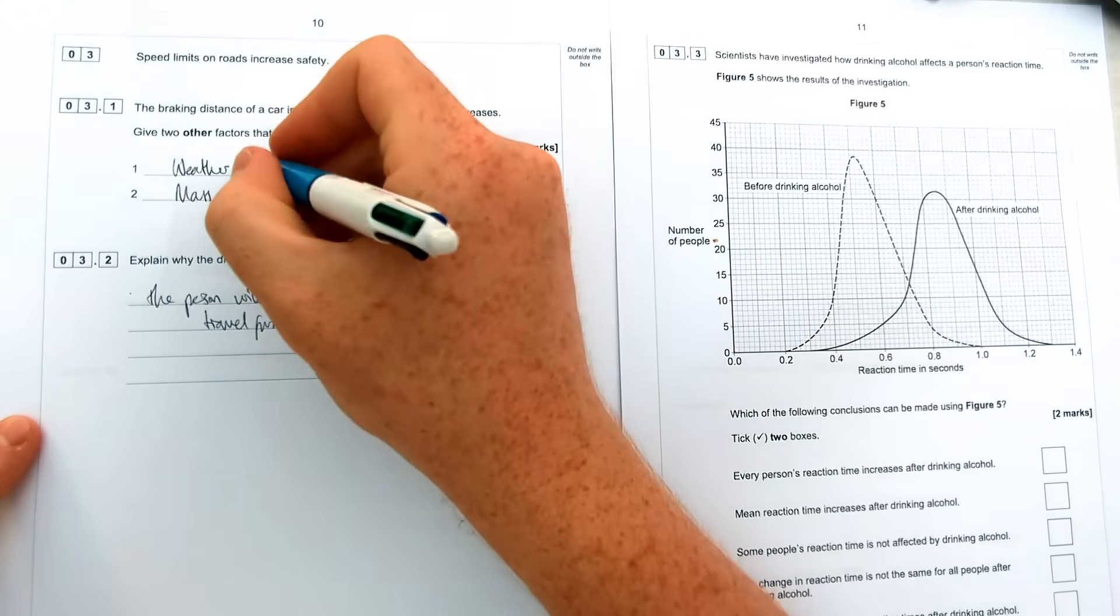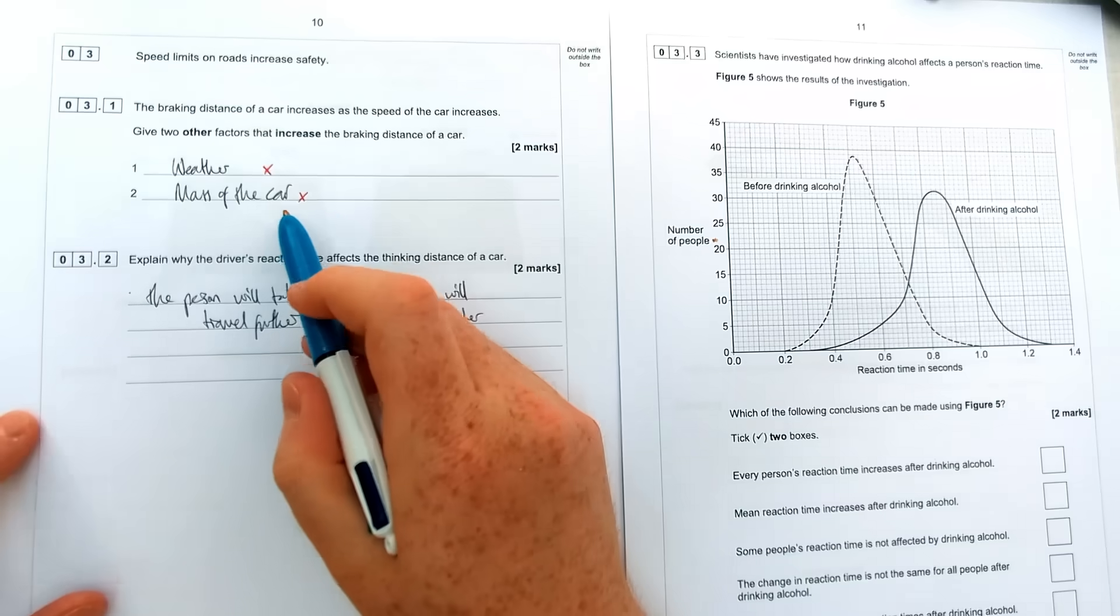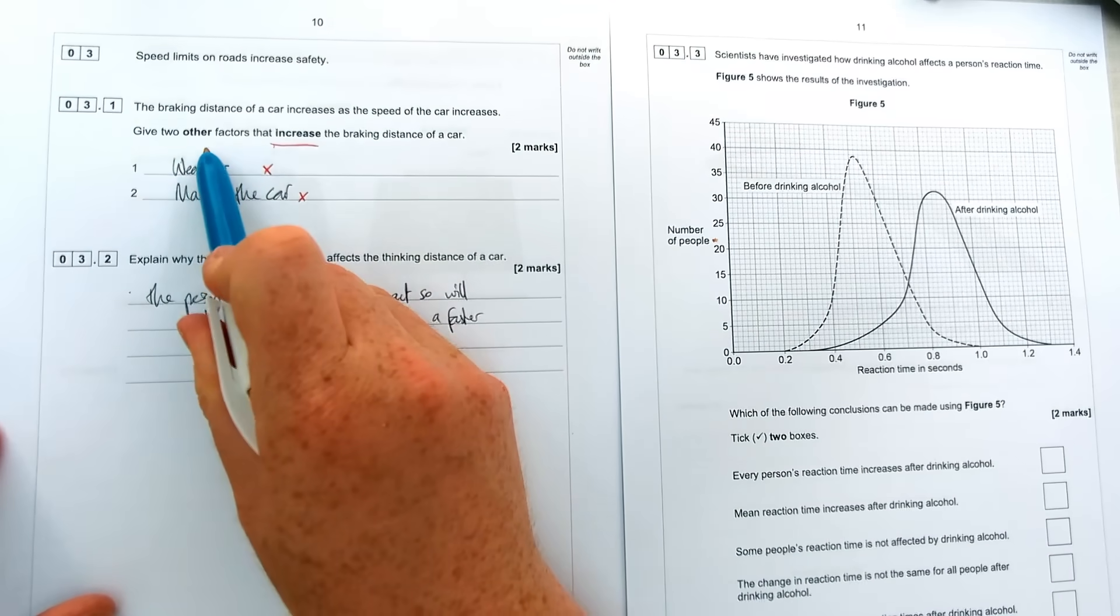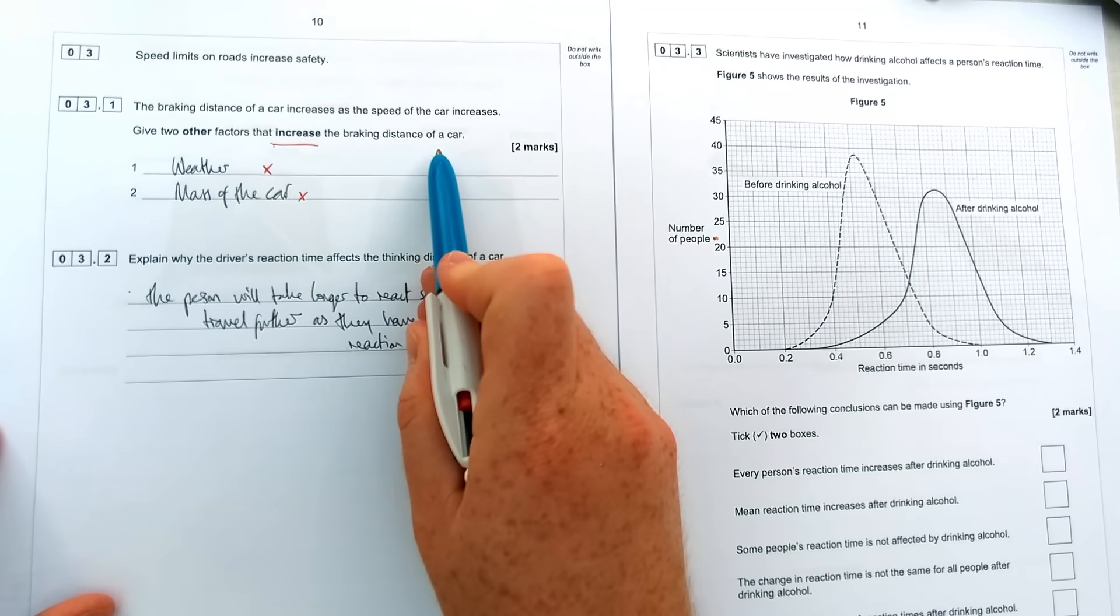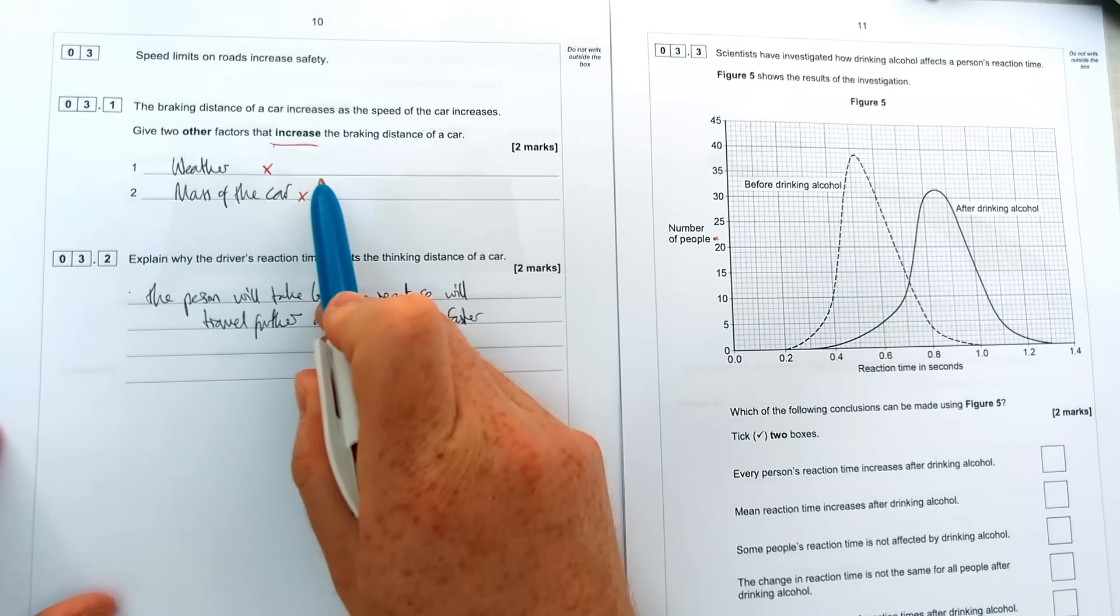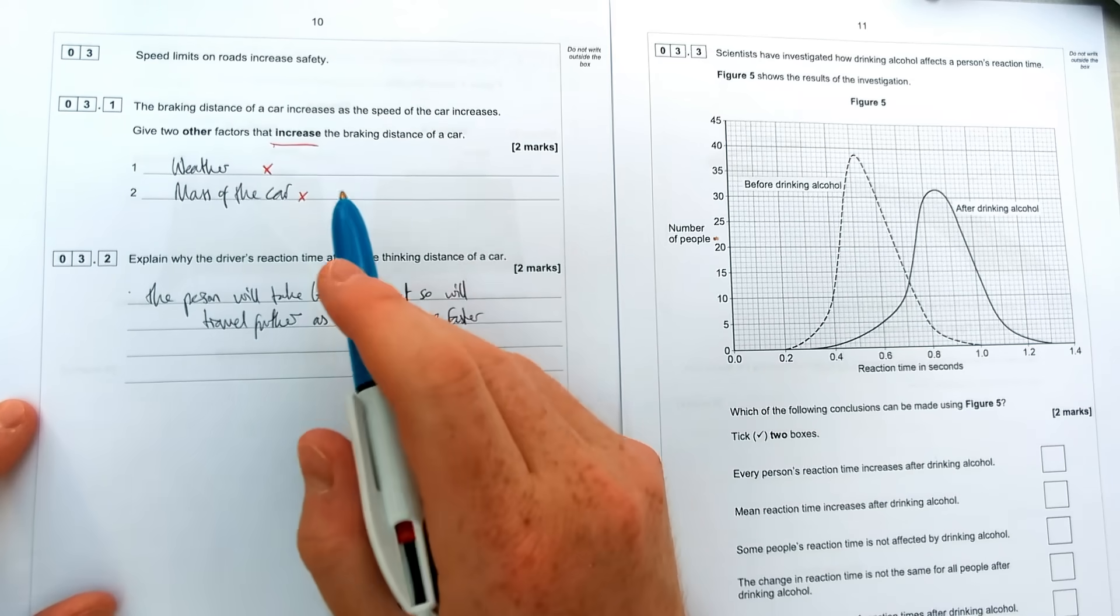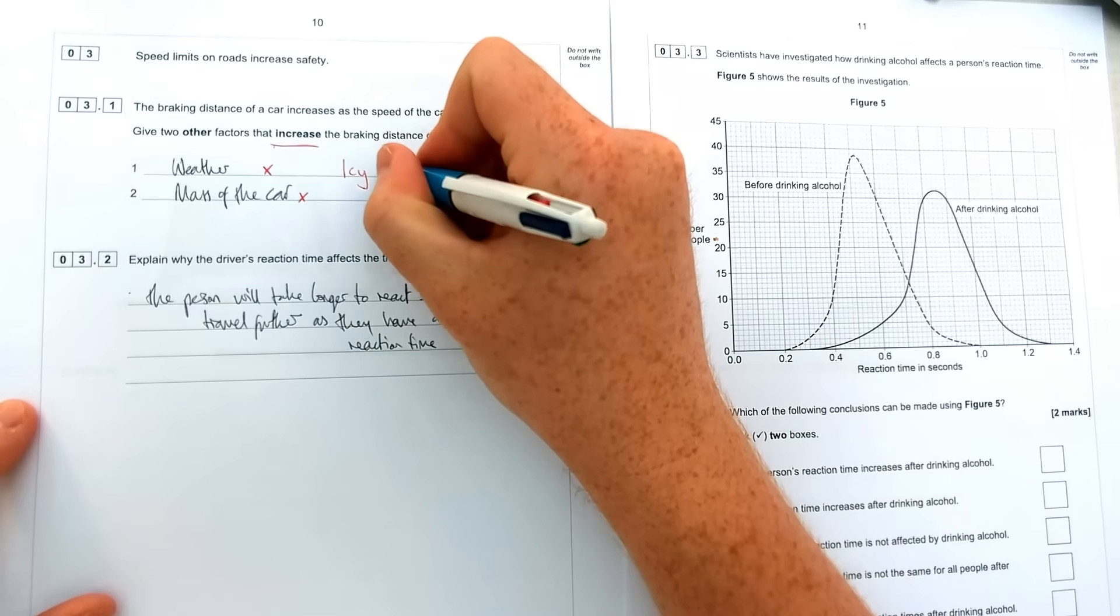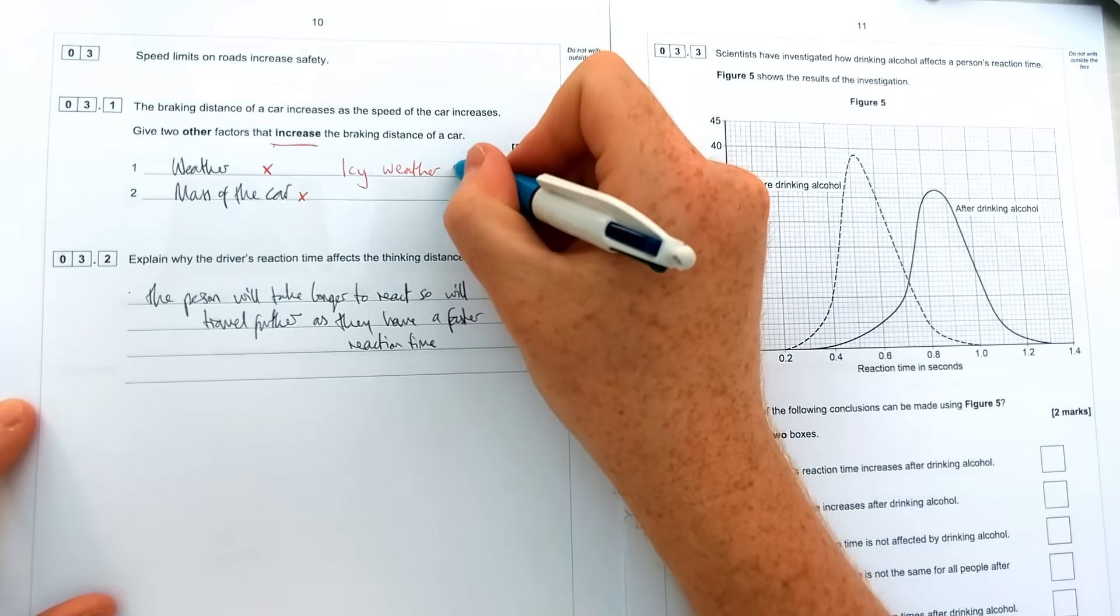However, both of these answers this person had put, while they might seem correct, are actually wrong. They're not going to get any marks for this question and the reason is for this word in bold here. The question says two factors that increase the braking distance of a car. So instead of weather, you'd say something like icy or poor weather conditions because if you had those conditions it would increase the braking distance.